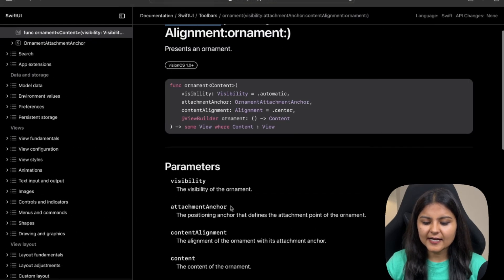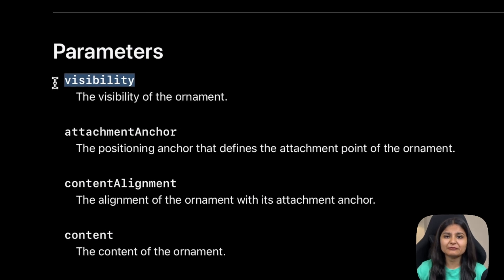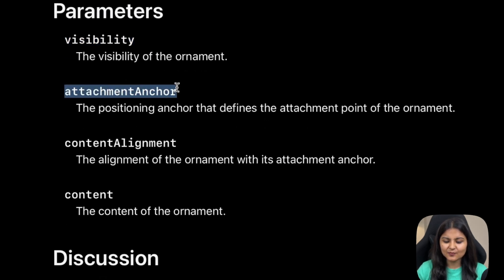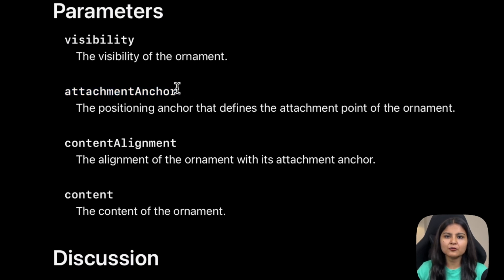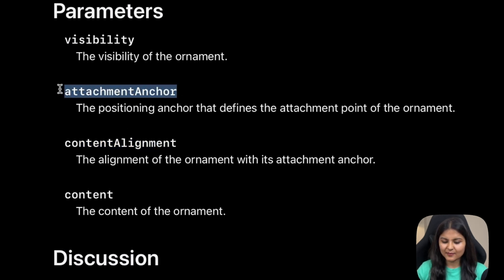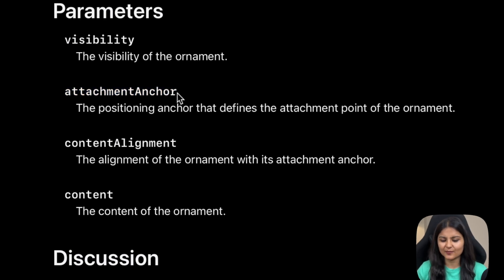This ornament modifier takes four parameters. The first is visibility — whether we want to display our ornament or not. The second is the attachment anchor, which defines the point where we want to attach our ornament relative to its scene, such as top, bottom, center, or bottom trailing. The third is content alignment, which specifies the alignment of the ornament with respect to its attachment anchor. And the last one is the content that we want to display.